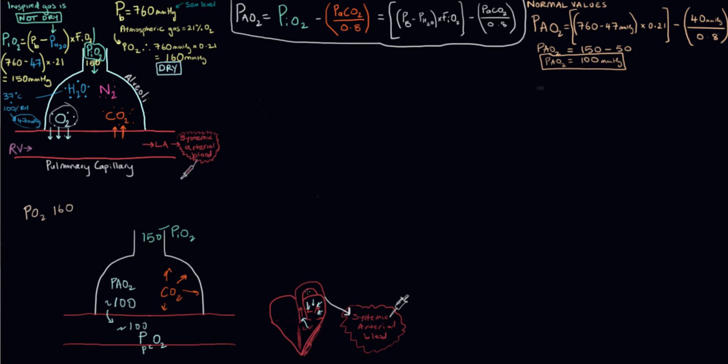But in the left atrium, it's going to be joined by blood from two other sources. The first source is from anatomic shunts. This is blood that has essentially bypassed the gas exchange and has gone from the right side of the heart as venous blood to the left atrium without being oxygenated.